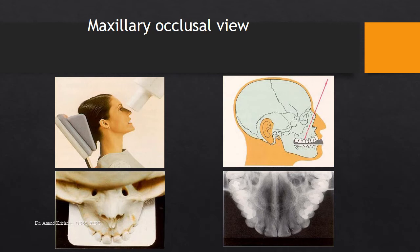The maxillary occlusal radiograph provides a general overview of the teeth and also allows clear visualization of the palate. Any palatal lesions, or lesions associated with the teeth extending to the palate, can be identified. It is particularly useful when you want a buccopalatal dimension perspective, since IOPA and bitewing only provide a mesiodistal dimension — making the occlusal view the go-to method for locating a lesion in another dimension.